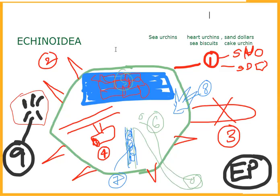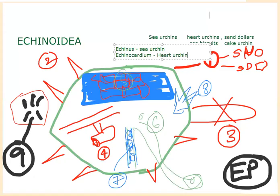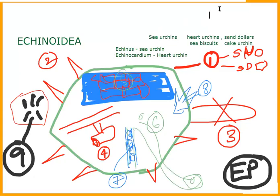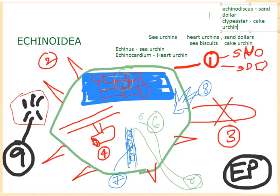Now let's go with examples. Echinus is commonly called sea urchin. Echinocardium is called heart urchin. Echinodiscus is commonly called sand dollar. Clypeaster is commonly called cake urchin. It's not possible to write all the examples — you write at least two.